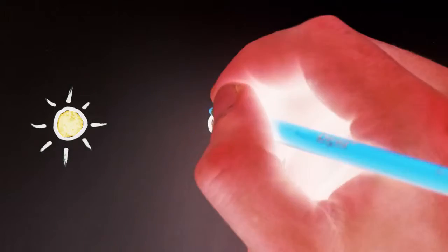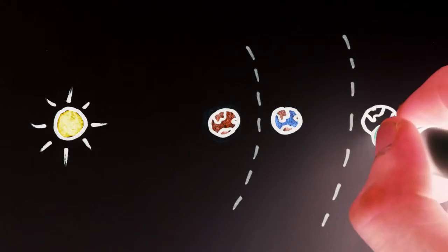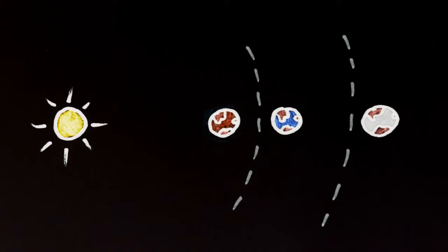The one we call Earth formed in a zone around the sun where oceans remained largely liquid in form. Had Earth been much closer to the sun, the oceans would have vaporized. Had Earth been much farther, the oceans would have frozen. In either case, life as we know it would not have evolved.